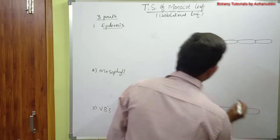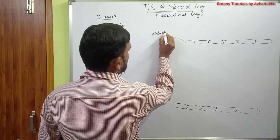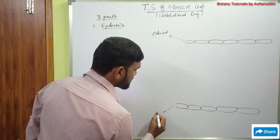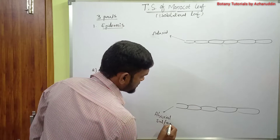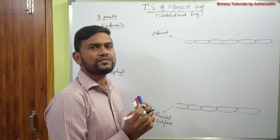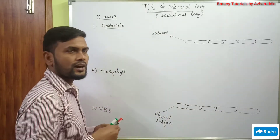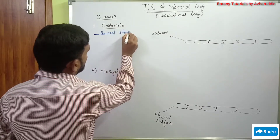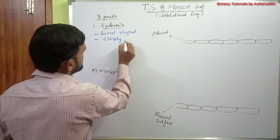The upper epidermis is also called adaxial epidermis or adaxial surface. The lower epidermis is also called abaxial surface or abaxial epidermis. In epidermis, cells are closely arranged without intercellular spaces, and the cells are barrel-shaped.